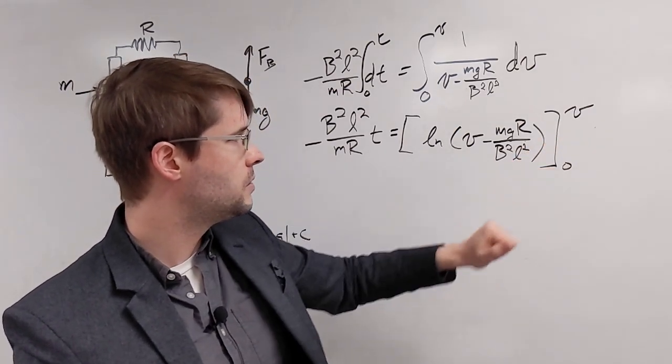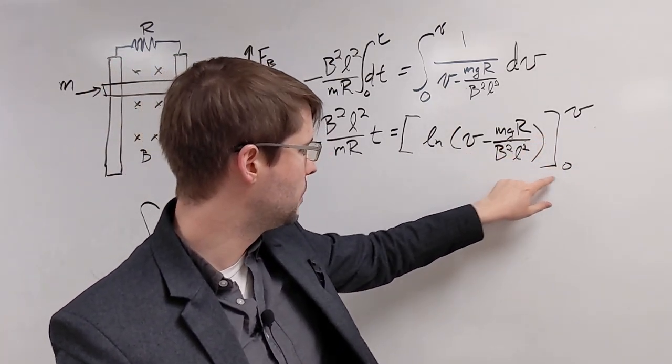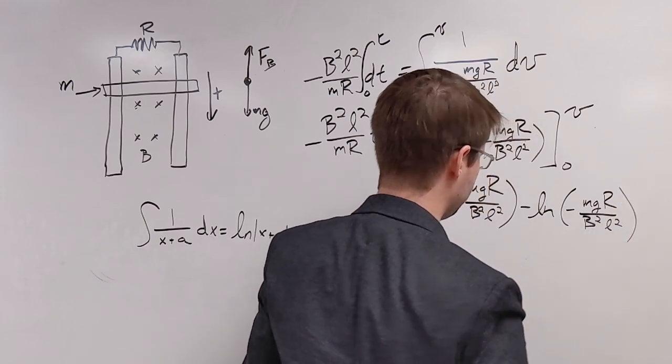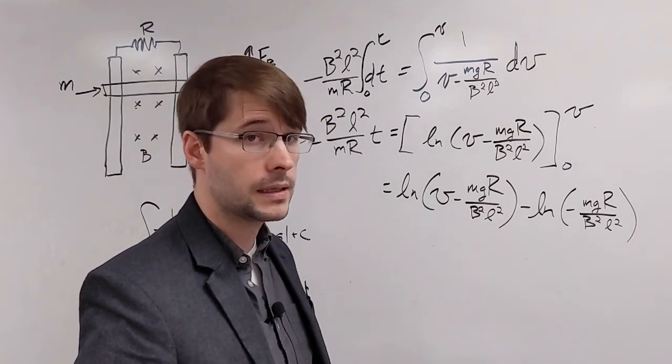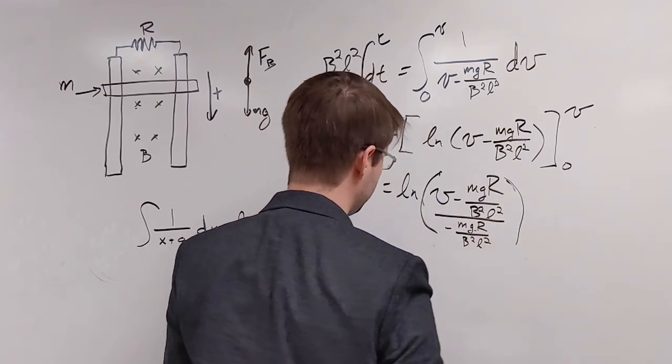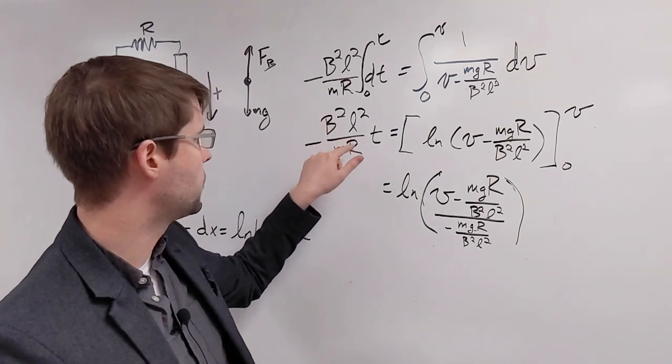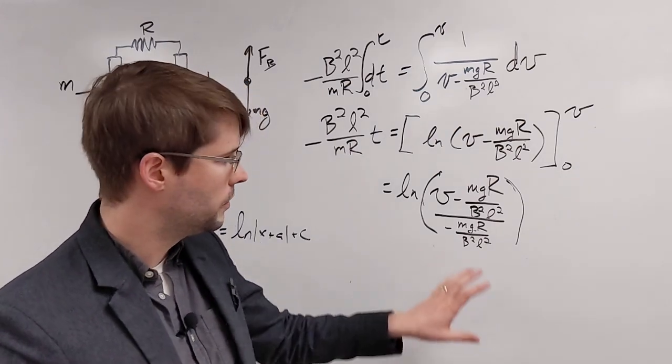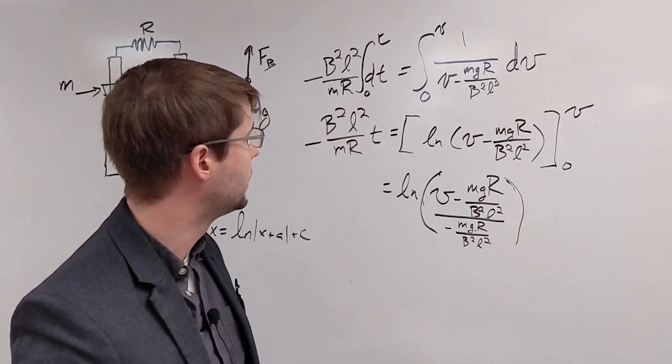So now what we're going to do is go ahead and substitute into this natural log right now. So we've got to do plug in v for v and plug in 0 for v and subtract the two. There we go. And remember, subtracting natural logs is the same as just dividing the internals. All right, there we go. So now we've got this is equal to minus b squared l squared over mr times t. Now we can use the definition of what the logarithm is to say that, well, this material inside of here is going to be equal to e raised to this exponent. So let's go ahead and write that out here.